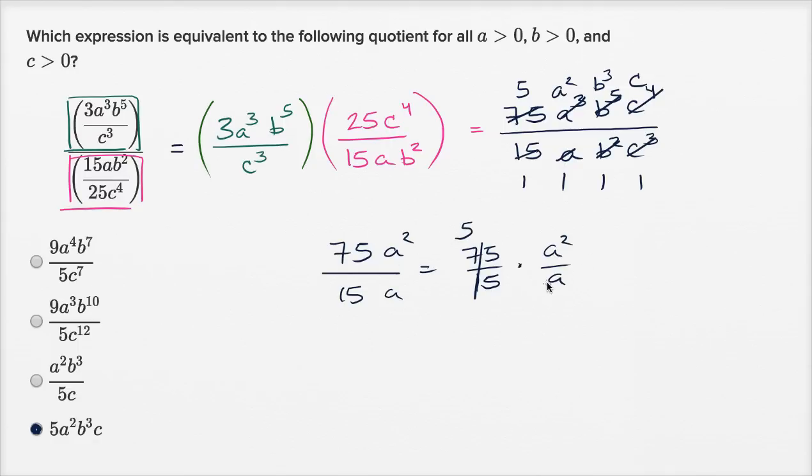And one way to view this is, this is a squared over a to the first. Our exponent properties tell us that this is going to be the same thing as a to the two minus one power, which is equal to a to the first power. And this is the same thing as saying, let's just divide both the numerator and the denominator by a, and you're just going to be left with a. So this part over here, this would just be five a. This is obviously a simplified version, just to feel good about the exponent properties.